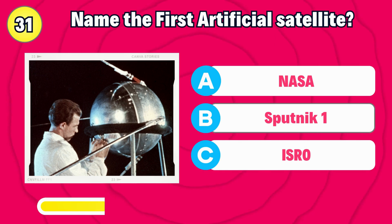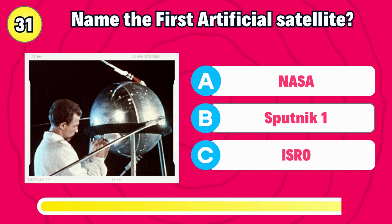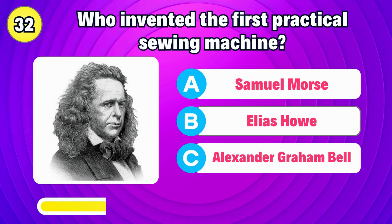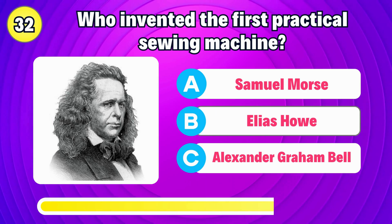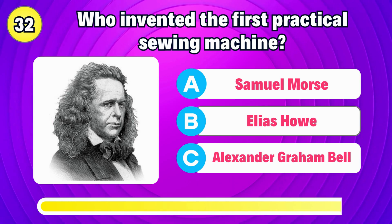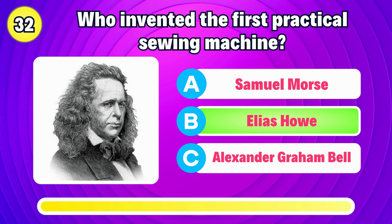Name the first artificial satellite. Right, it's Sputnik 1. Who invented the first practical sewing machine? Right, it's Elias Howe.